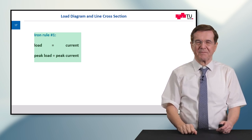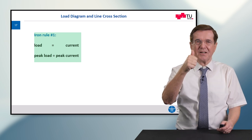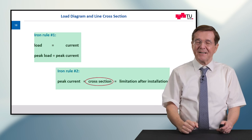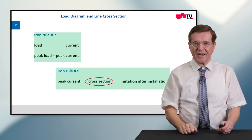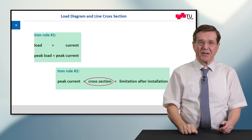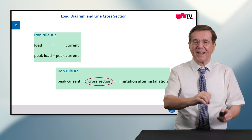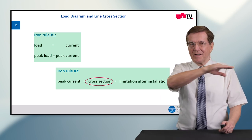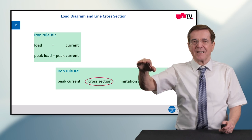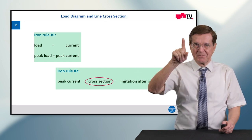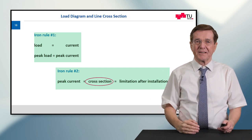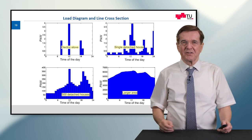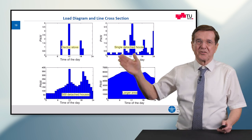There are two iron rules which lead to the construction of electric networks and which must be observed. Iron rule number one: load is current and peak load is peak current. Iron rule number two: the peak current determines the cross-section of the cable, the line, or the overhead line. Once it is installed we are limited — we cannot extend this easily. So the peak current is the measure for installation purposes.